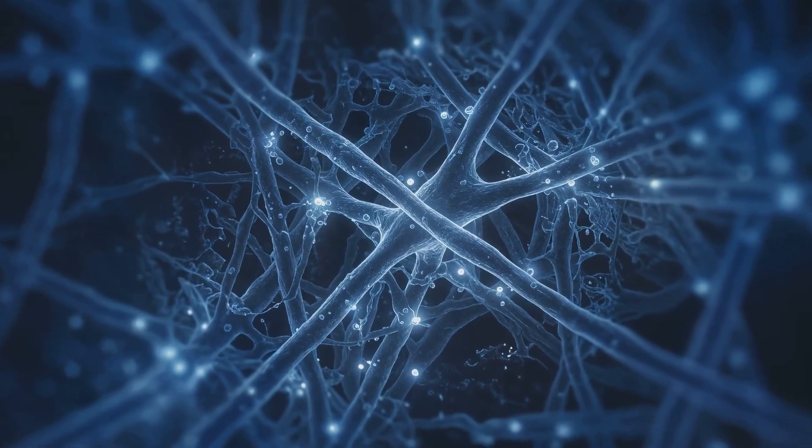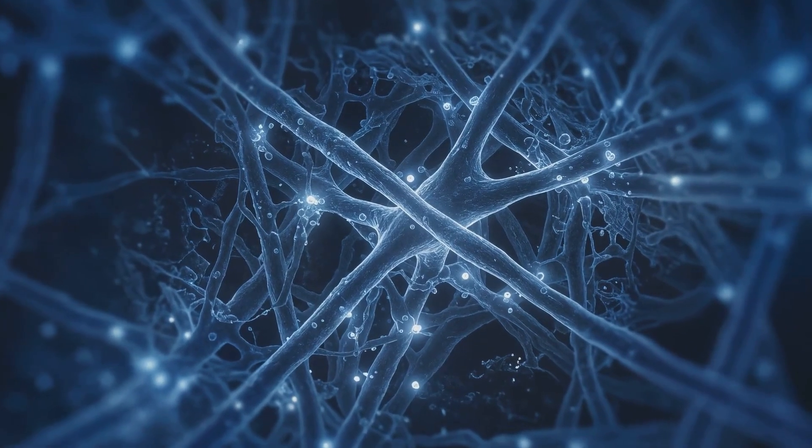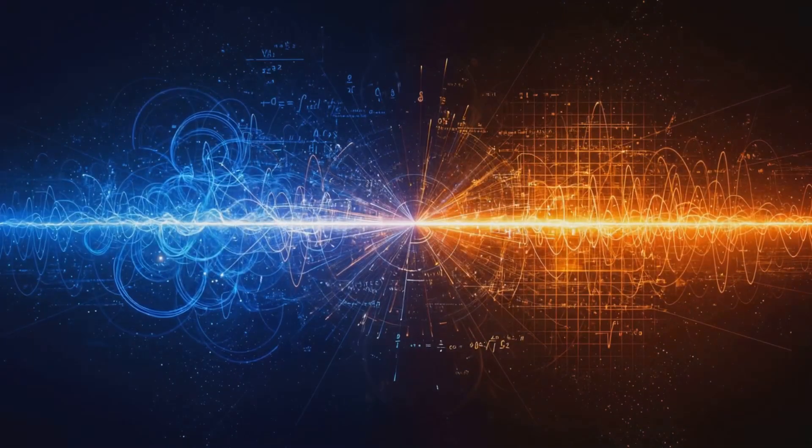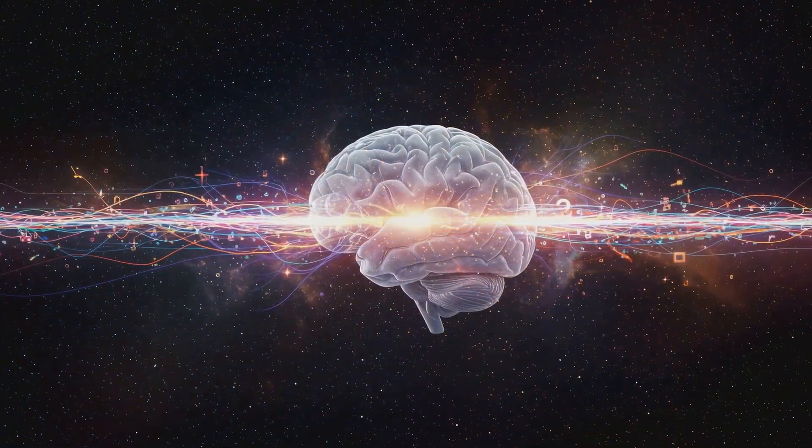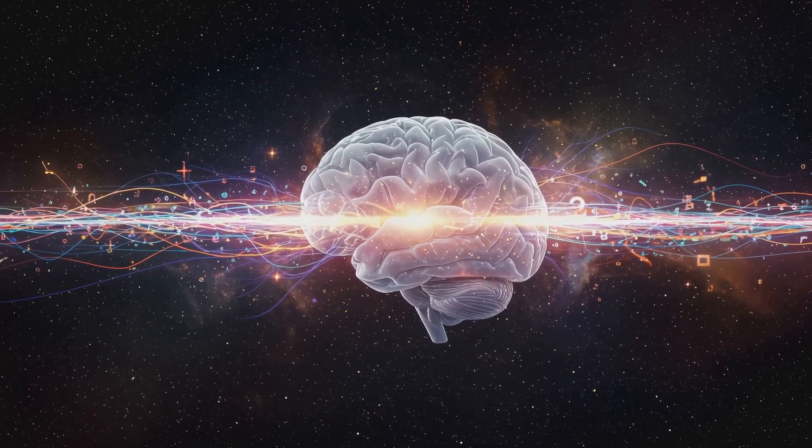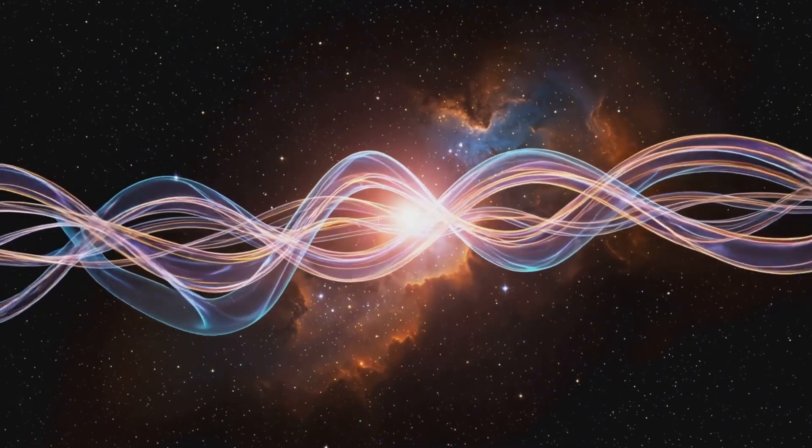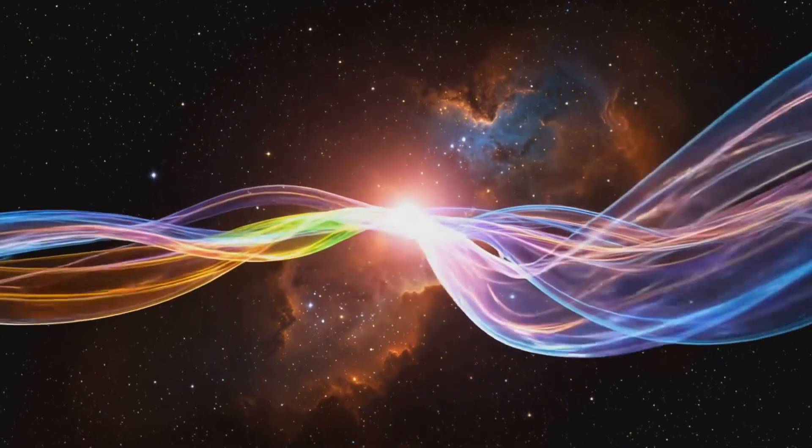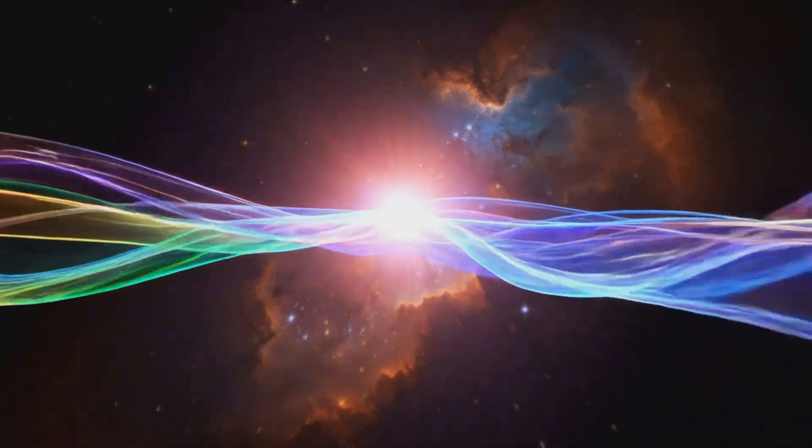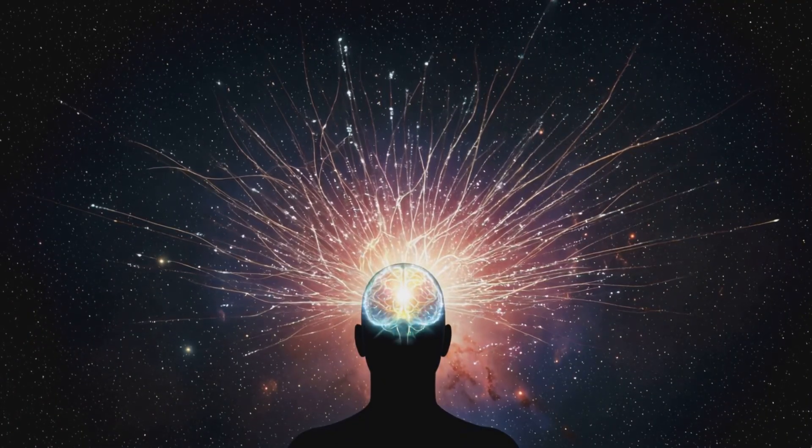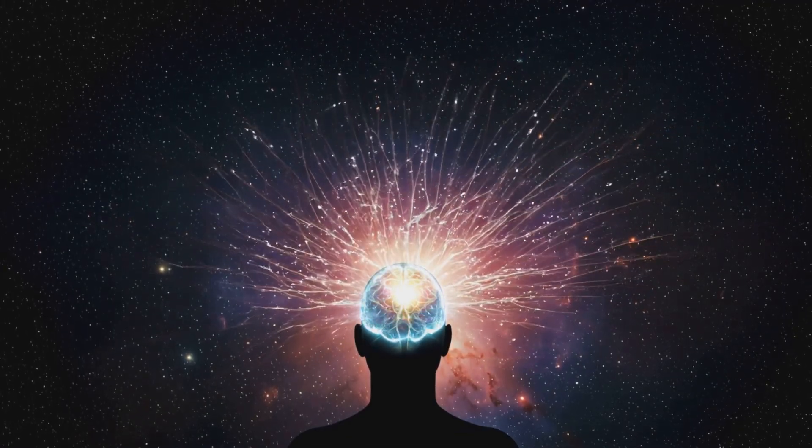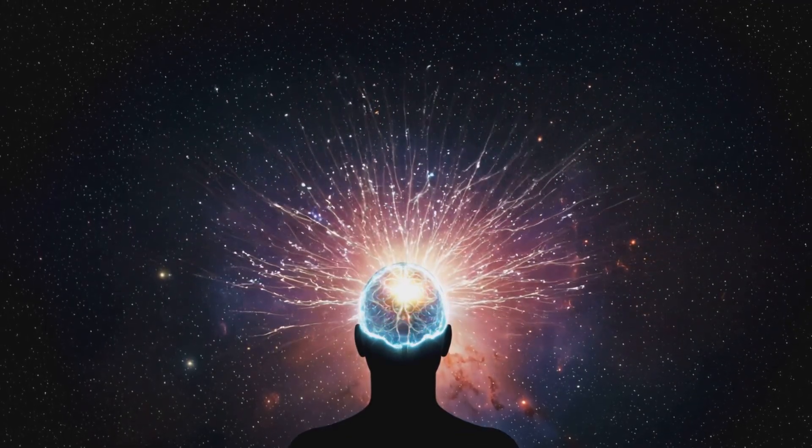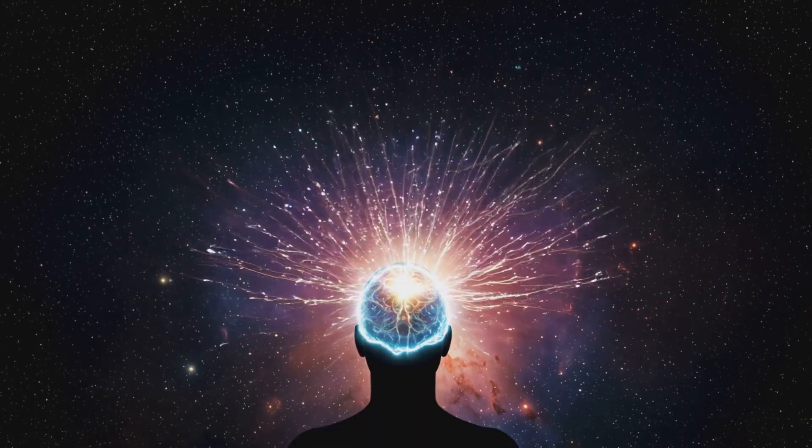Microtubules resonate with quantum frequencies, modulating the fundamental field of reality. Consciousness results from Fourier transformation, converting quantum oscillations into structured perception. The brain functions like a receiver, selecting and filtering one experience from the vast field of potential timelines. If this is true, then we do not generate consciousness. We tune into it. Consciousness is not separate from the universe, but is a reflection of the same quantum information process that structures reality.